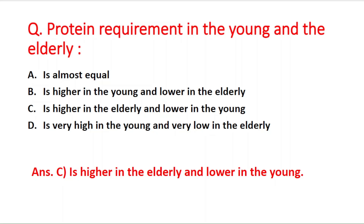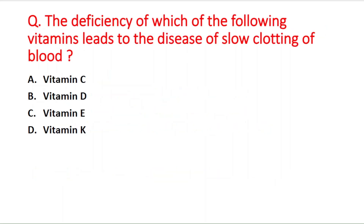Next question: the deficiency of which of the following vitamins leads to slow clotting of blood? Option A vitamin C, B vitamin D, C vitamin E, D vitamin K. The right answer is option D — slow clotting of blood is due to deficiency of vitamin K.